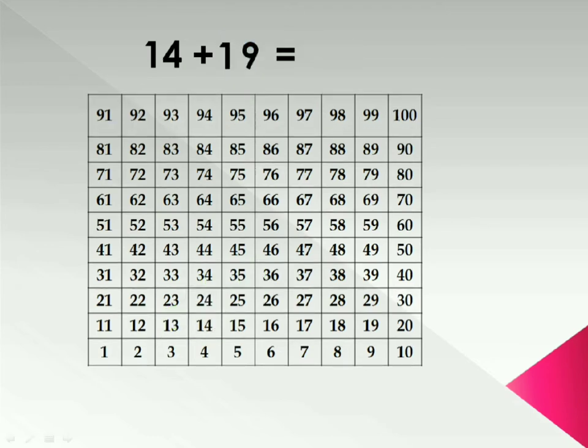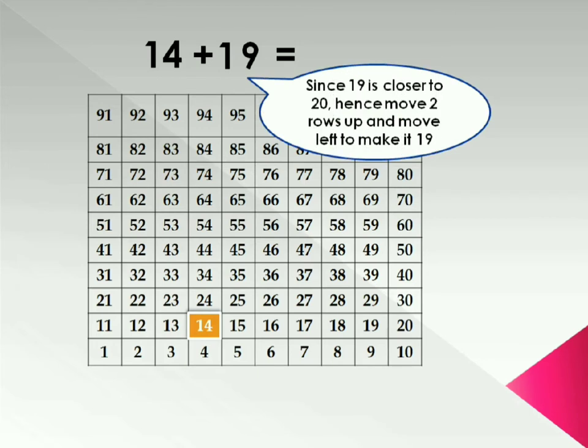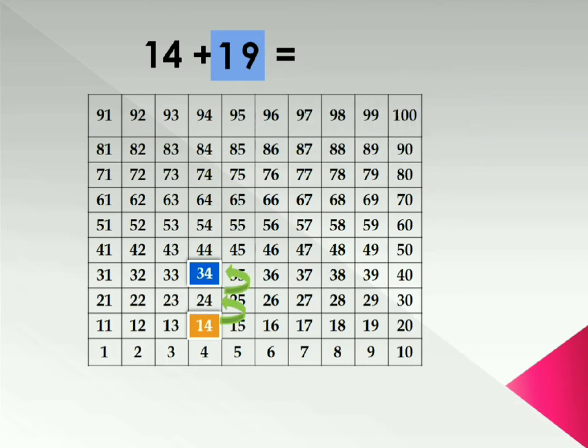Next example 14 plus 19. Highlight 14 in the table. And 19 is close to 20. So we will move two steps upward. As it has two tens. And one left move will make it 19. See on the screen. Two steps upward is 34. And one left move is 33. Hence answer is 33.